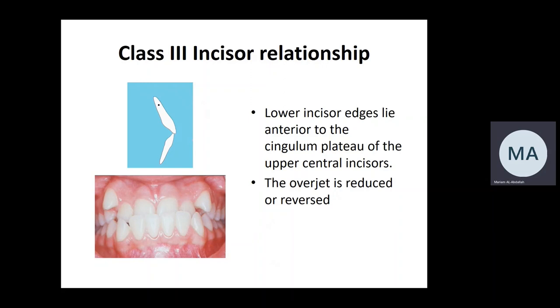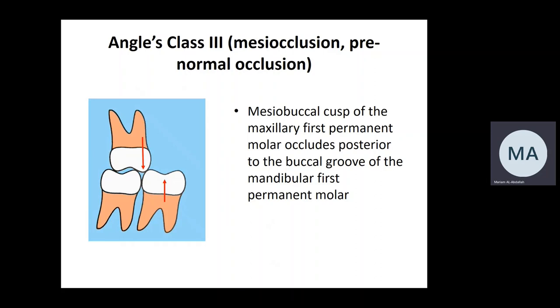Patients with class three incisor classification usually have reduced overjet, zero overjet (edge to edge), or reversed overjet. Not every patient with class three incisor classification needs to have reversed overjet or anterior crossbite. Here we have anterior crossbite affecting all four anterior incisors — this is still called class three incisor classification.